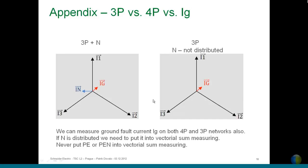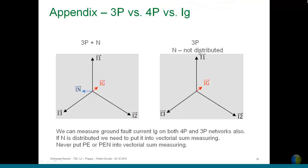A common question: can ground fault protection be provided for 3-pole and also for 4-pole (3P+N) networks? No problem for 3P+N — it works as standard. For a 3-pole network where N is not distributed, it also works fine. But if N is distributed, it must be included in the measuring aperture for ground fault protection. Important: never put the PE or PEN conductor into the vectorial sum measuring devices.